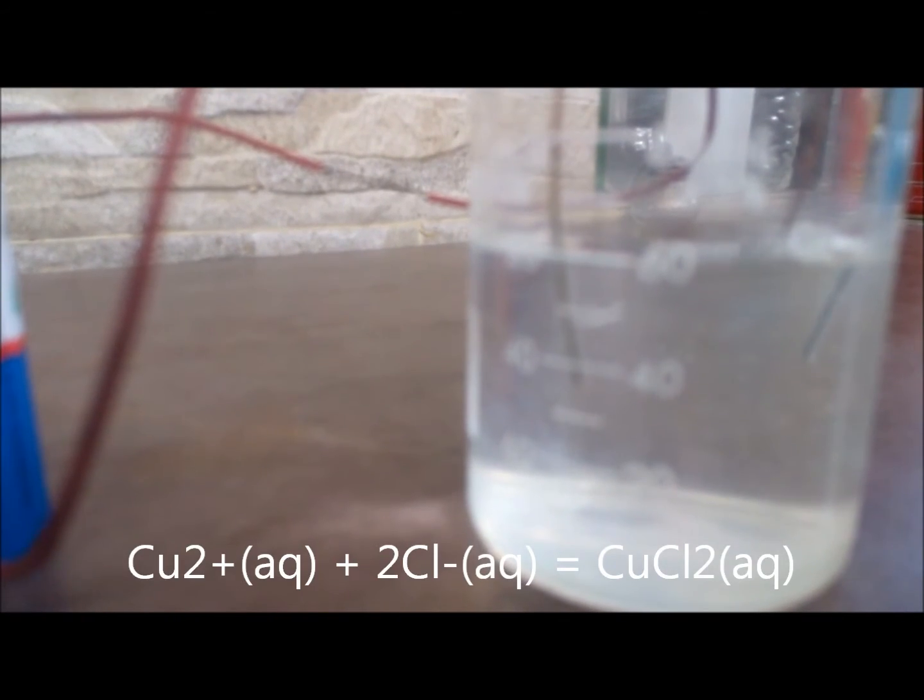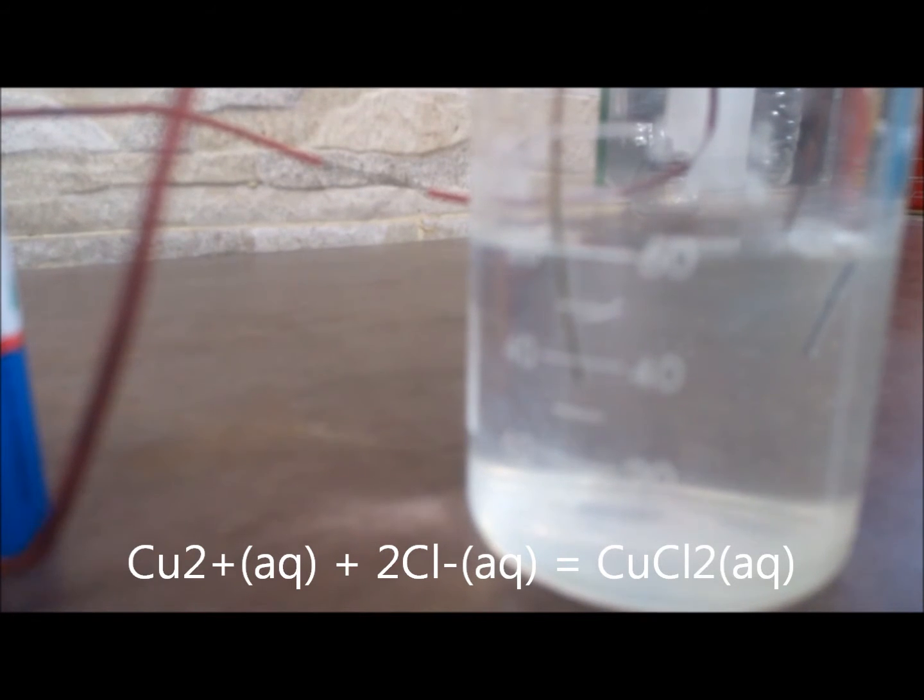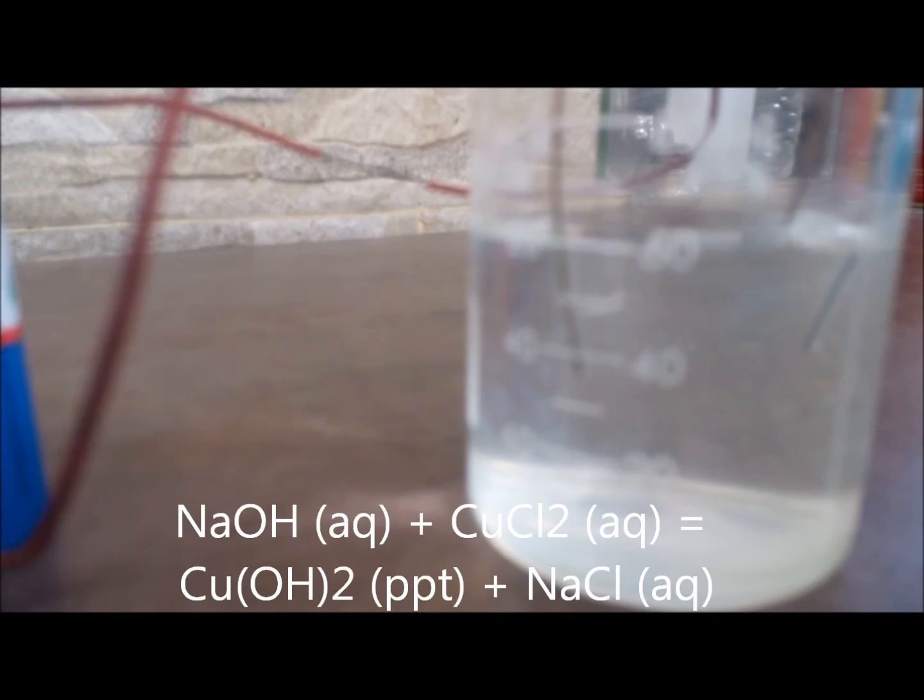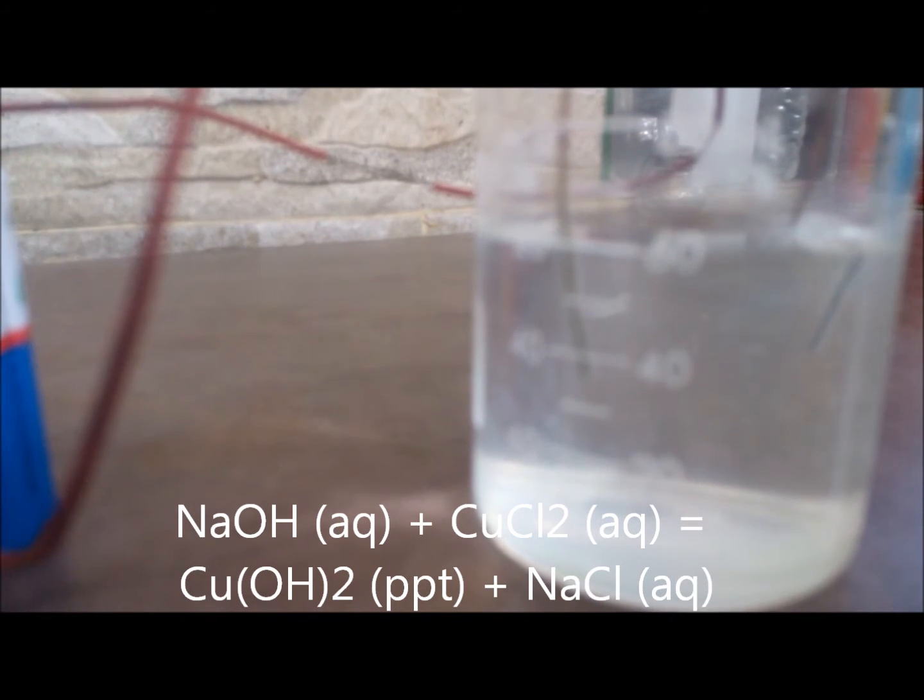So actually instead of Cl2 gas being released, here copper is getting oxidized from the electrodes to cupric ion. We can also say that the cupric ion from the electrodes is forming CuCl2, that is cupric chloride, which in turn reacts in a double displacement reaction with the sodium hydroxide to give Cu(OH)2 and NaCl back.